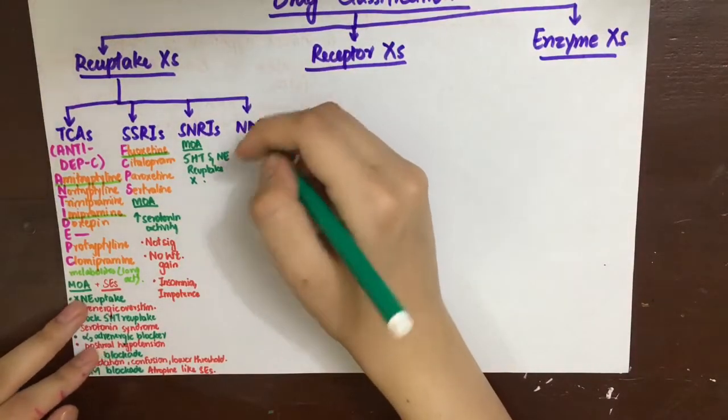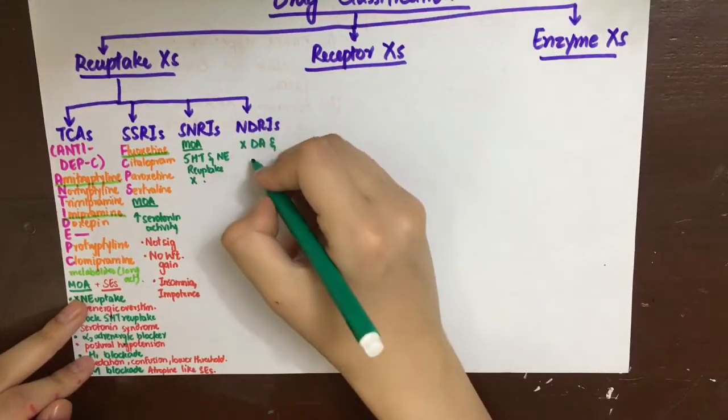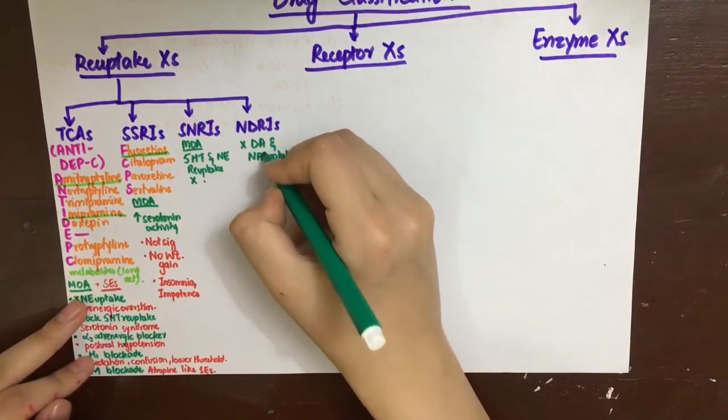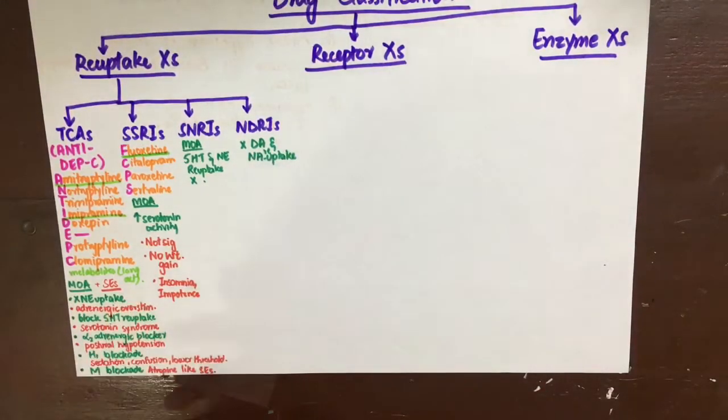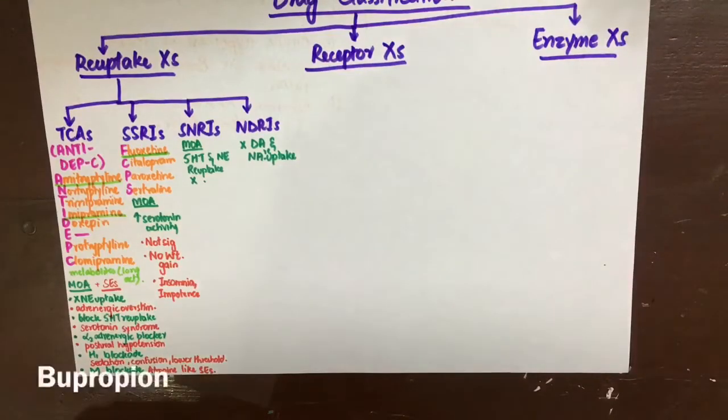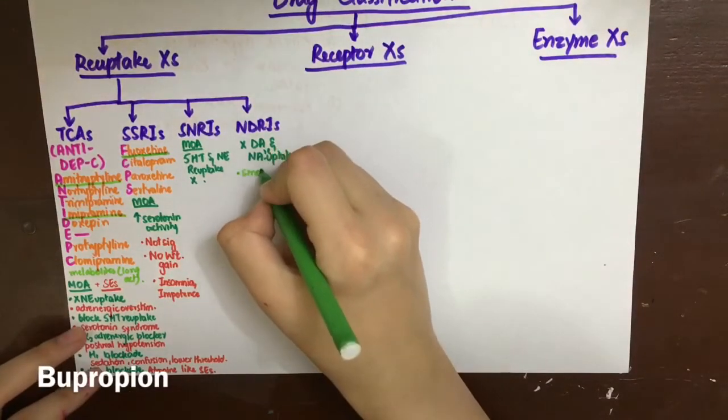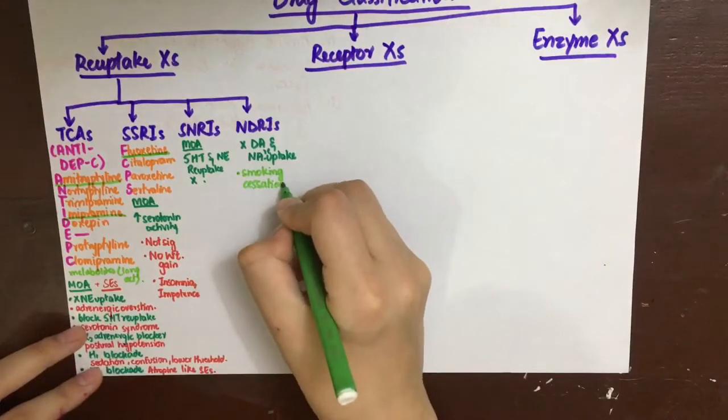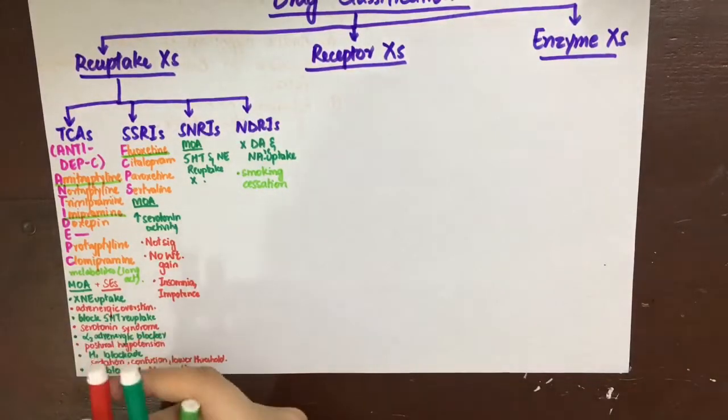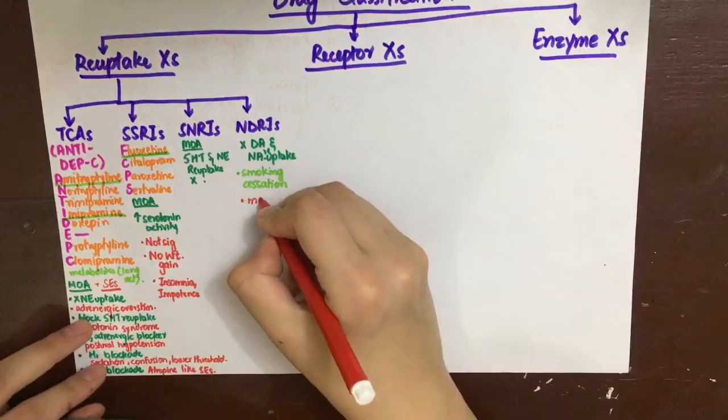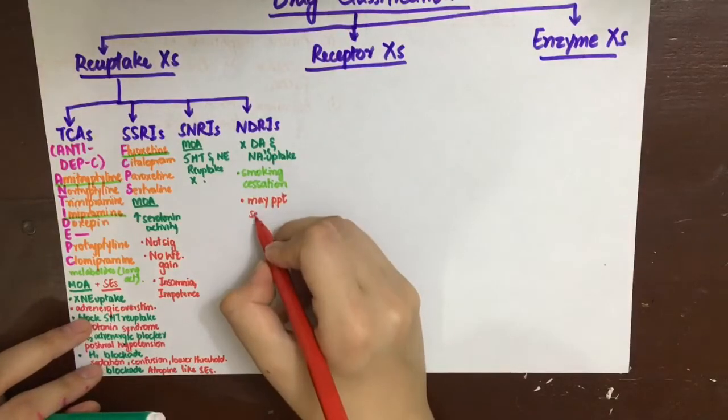Next, we have NDRIs that inhibit reuptake of both dopamine and noradrenaline into the neuron. And the drug included is bupropion. It is used in smoking cessation and it will not have all the side effects associated with muscarinic, histaminic, and alpha-1 blockade, but it can precipitate seizures.